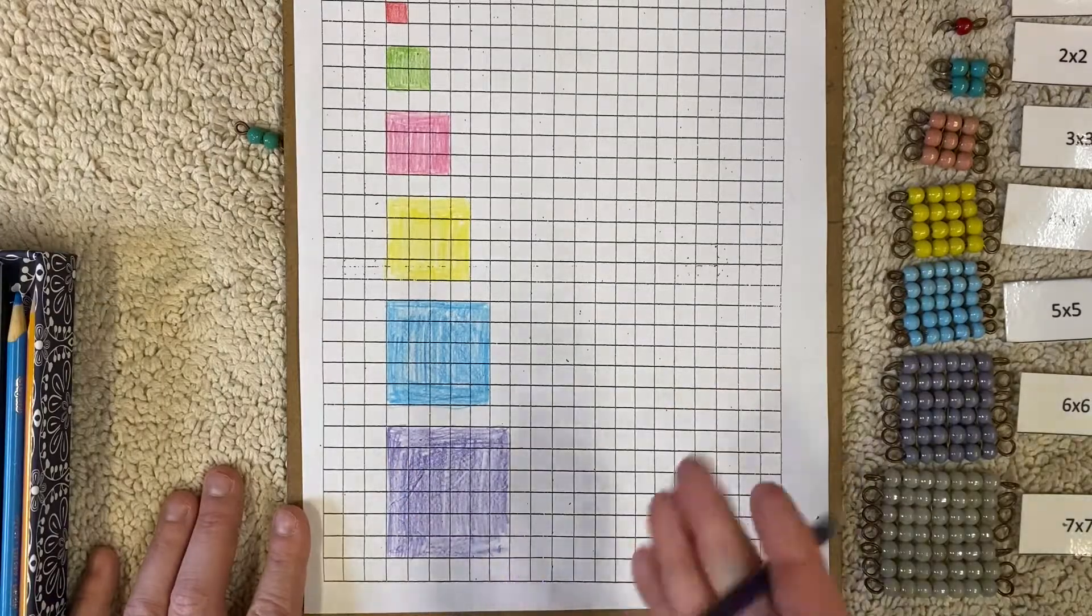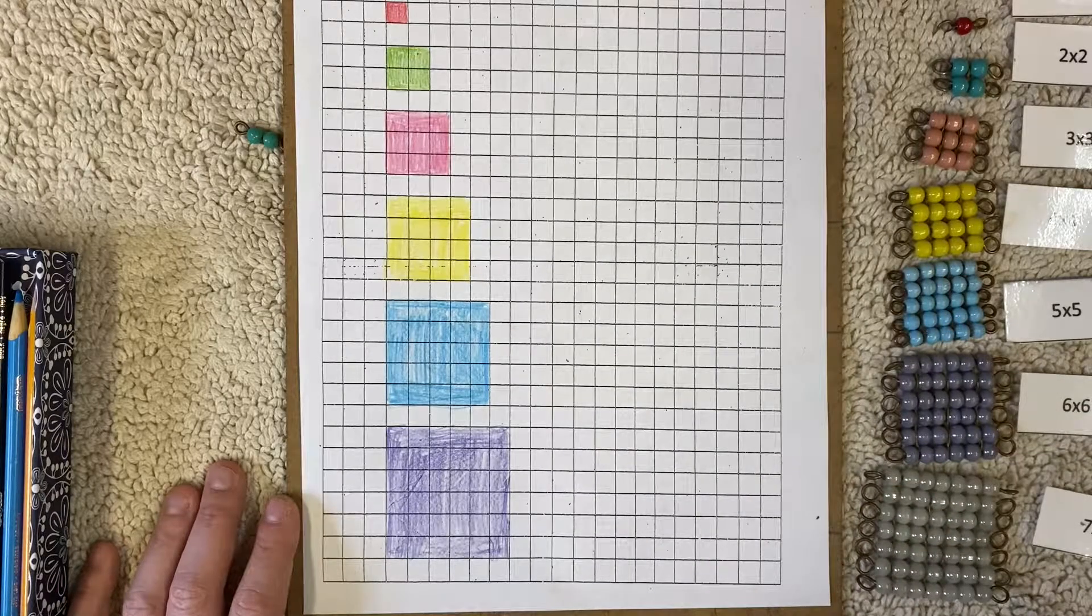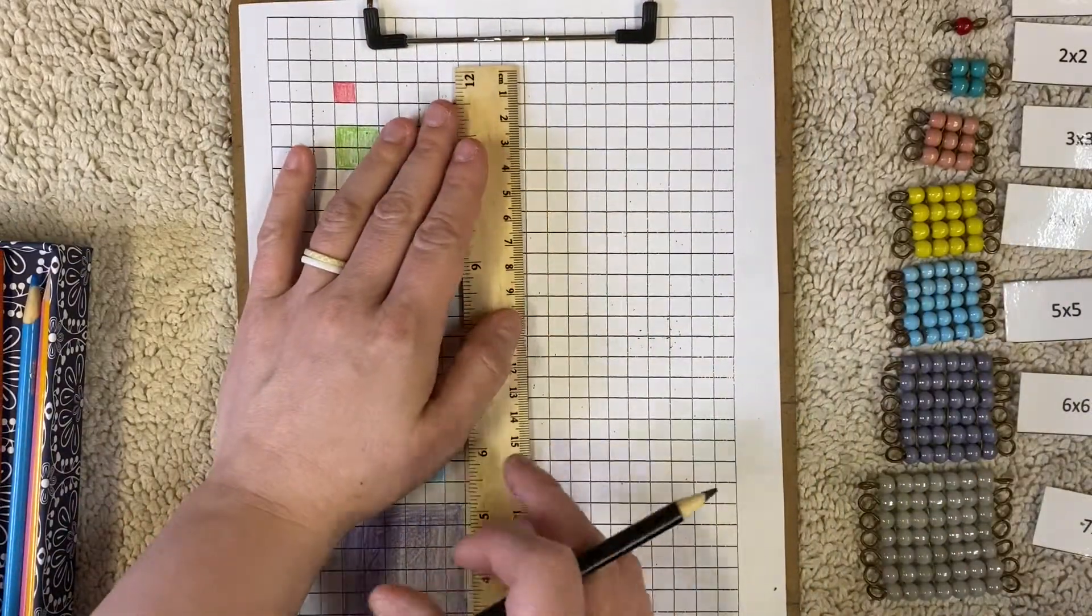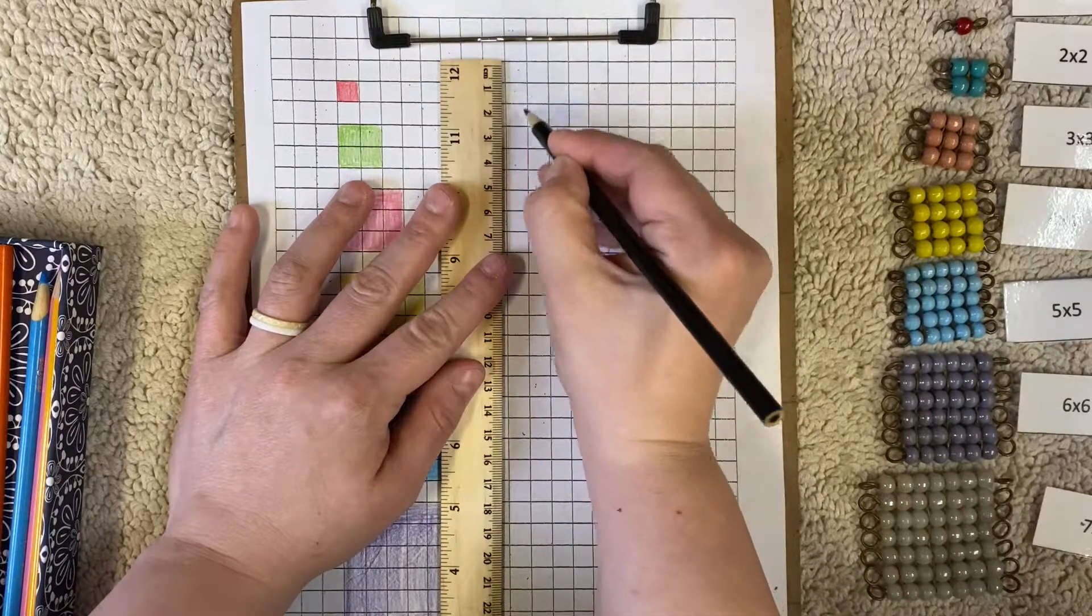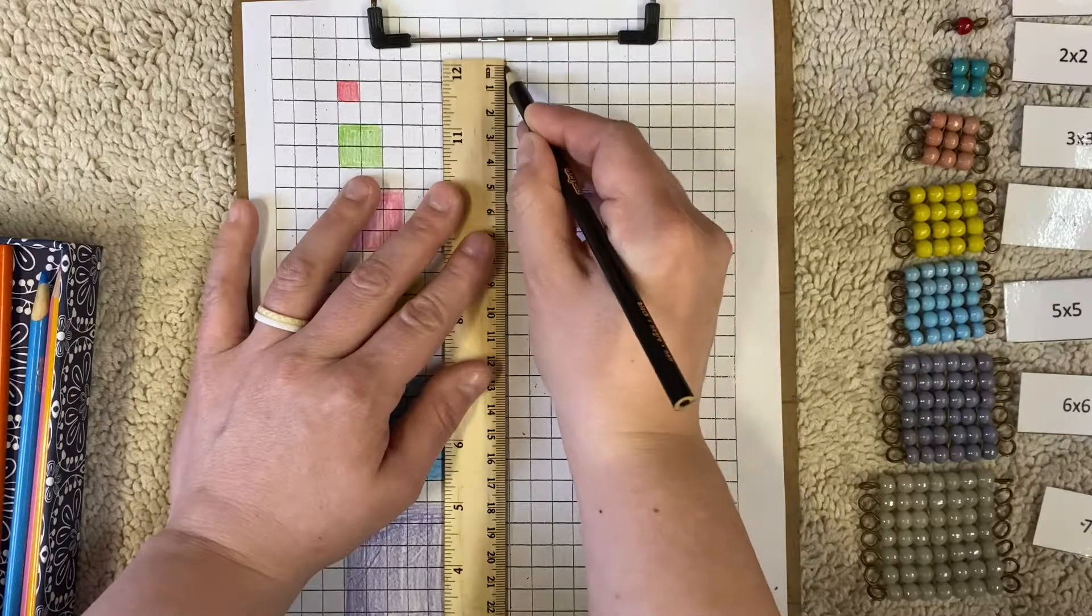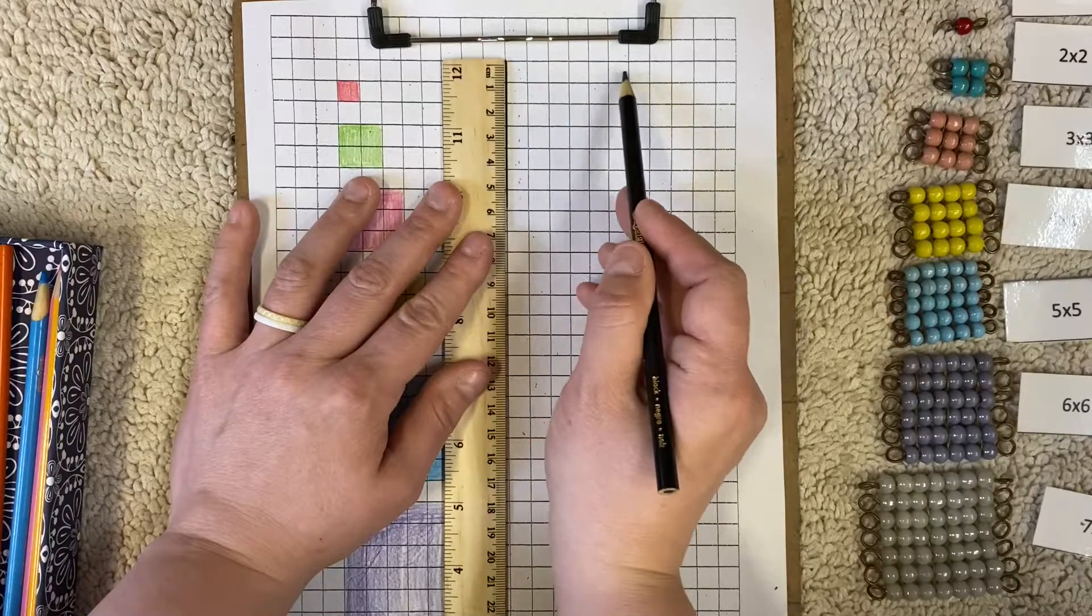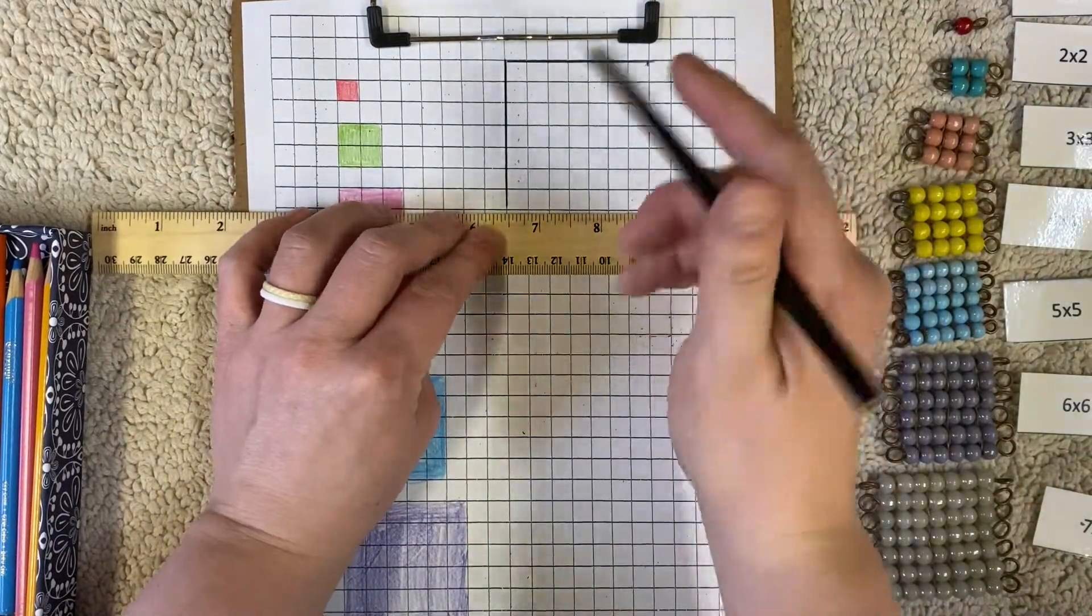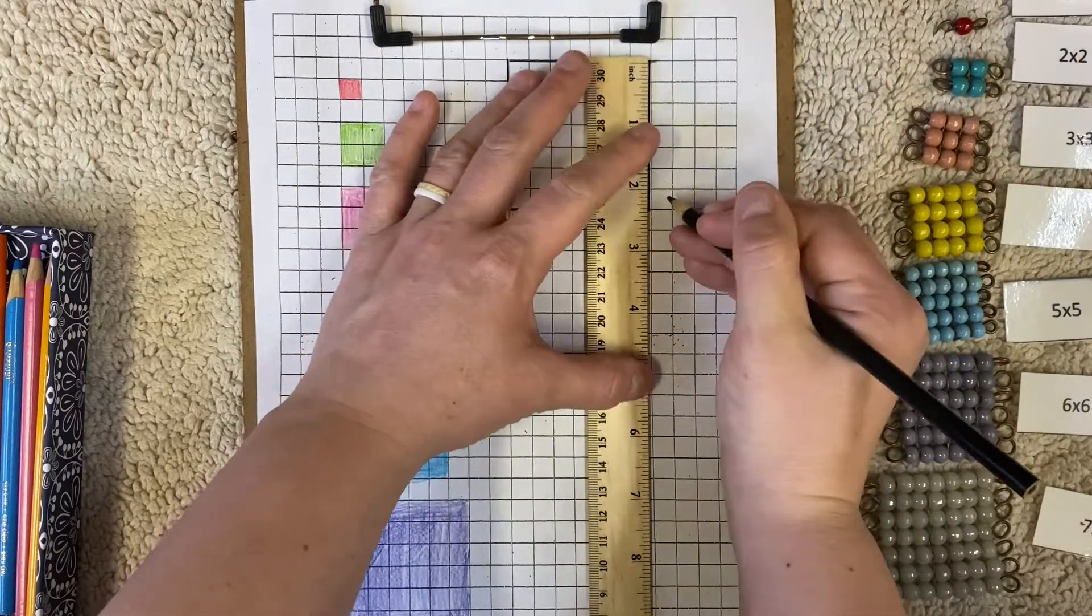Now I'm going to use yellow for my four. I'm just sticking with the colors that we have with our bead chains. However, you can choose whatever colors you want. Five is light blue. I like to count and then I know where I need to color. Six is purple. I'm always going to double check myself on these sevens.